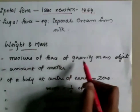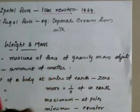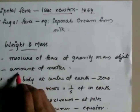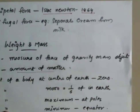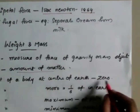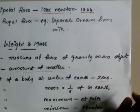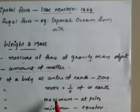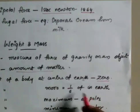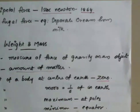A measure of the force of gravity is weight; a measure of the amount of matter is mass. Body weight varies: on some bodies it is 1/6, on others it is 3 times. Maximum weight and minimum weight at the equator.